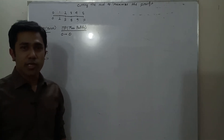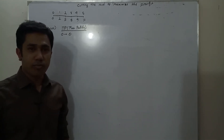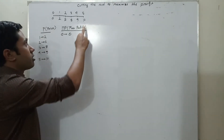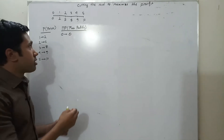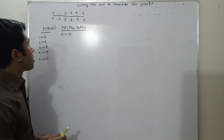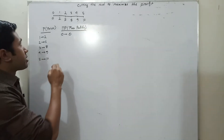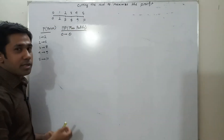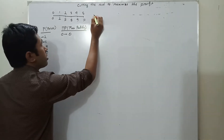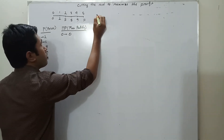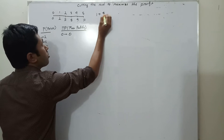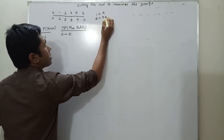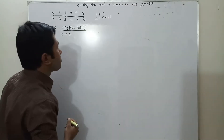My name is Saladin. Today I will discuss the rod cutting problem. Suppose I have a rod of length 5. In the market, the price for a 5-length rod is 10, but a 1-length rod costs 2 and a 4-length rod costs 9. So if I cut the rod into 1 plus 4, I can maximize the profit to 11.